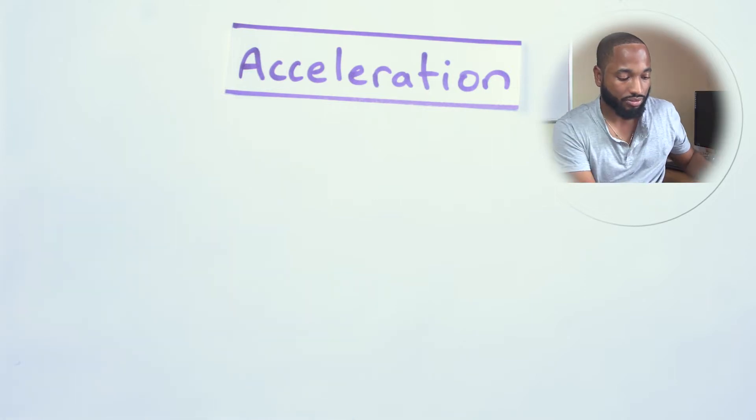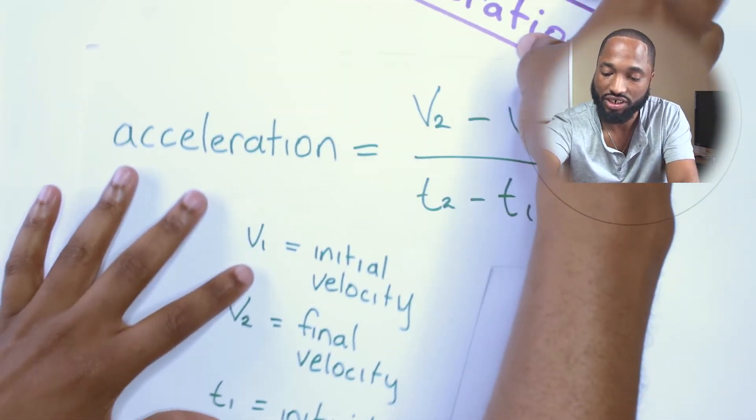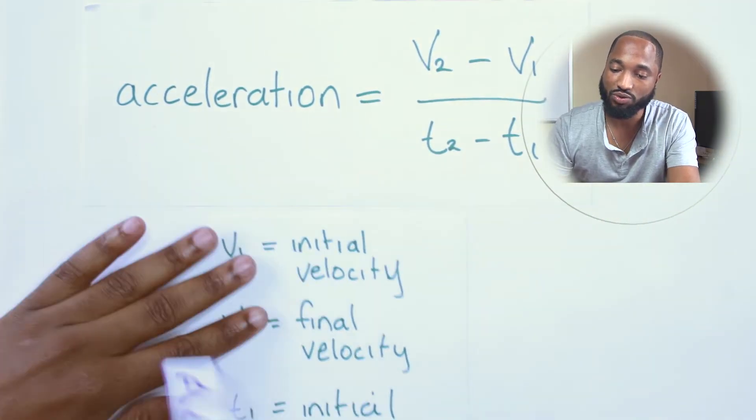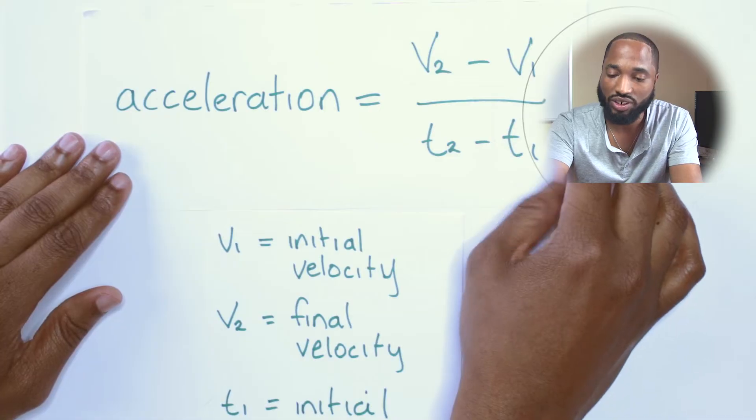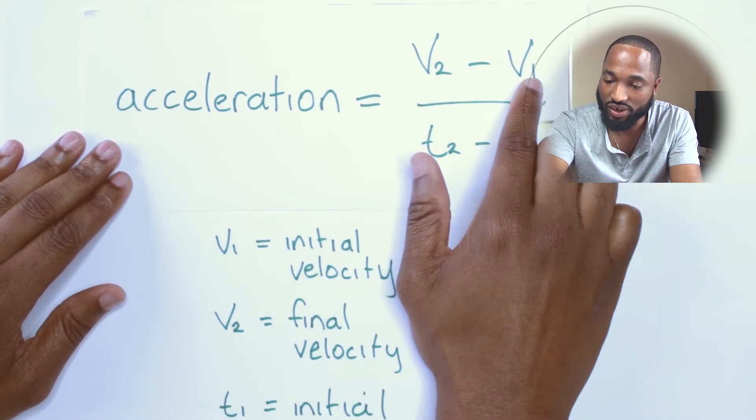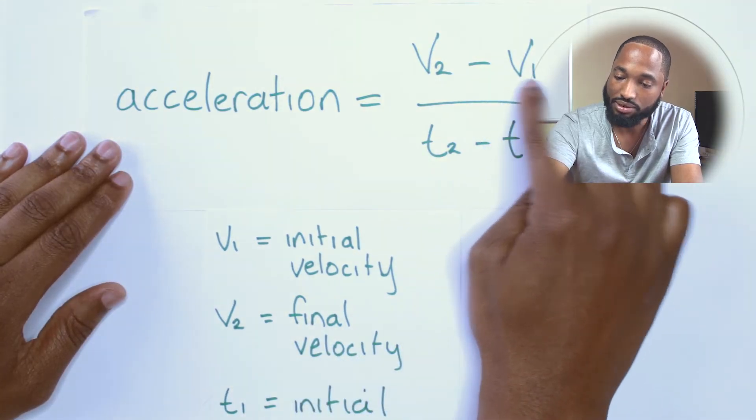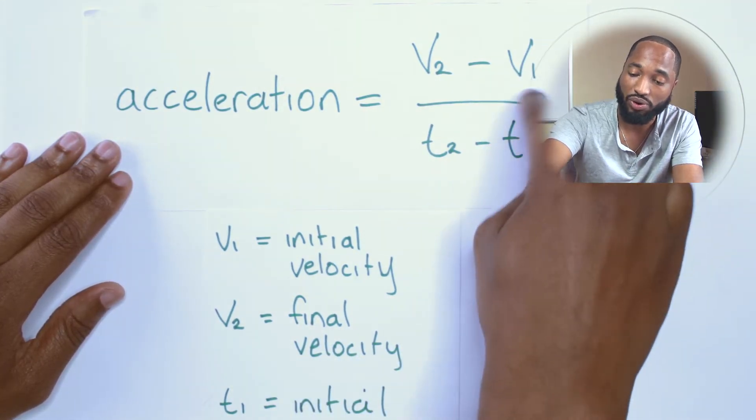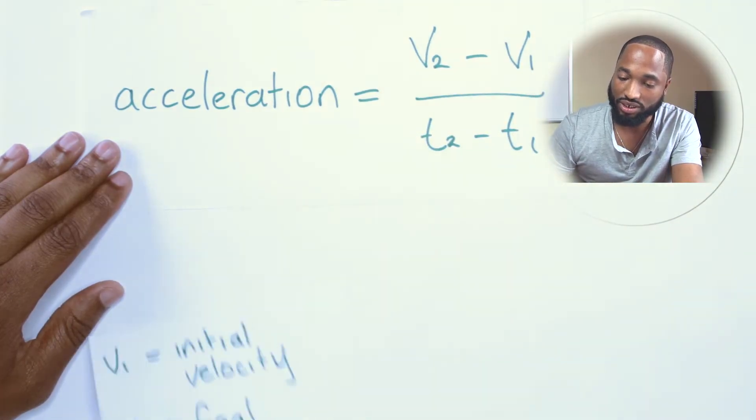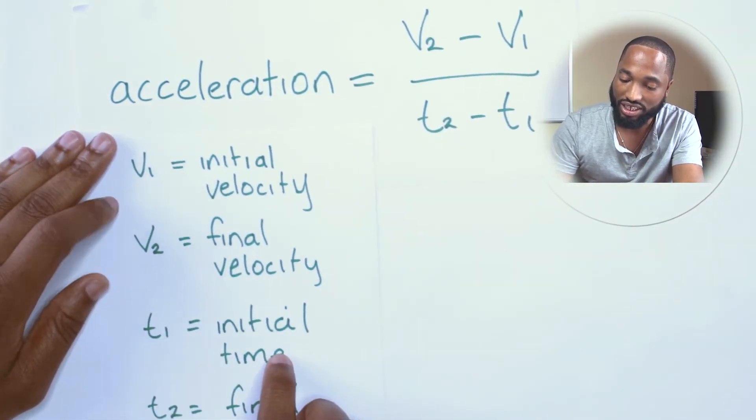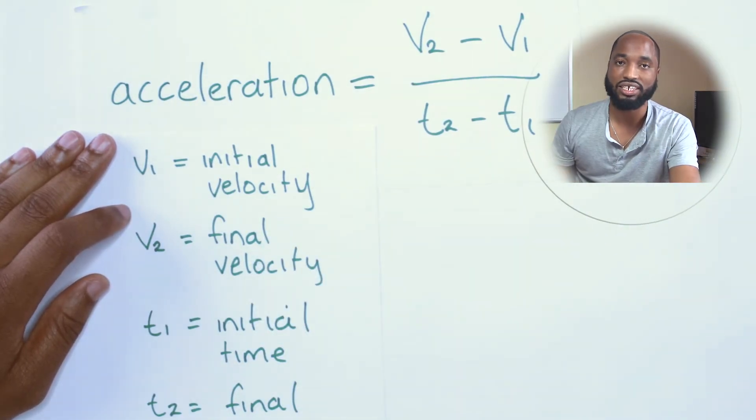Yes, this is how it would look mathematically: acceleration is equal to v2 minus v1 over t2 minus t1. This is the change in velocity—v2 is the final velocity and v1 is the initial velocity, how fast you are going initially. And t1 is the initial time and t2 is the final time. So this is the equation for acceleration.